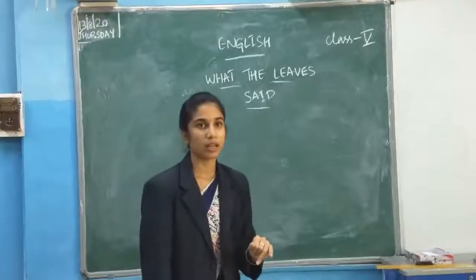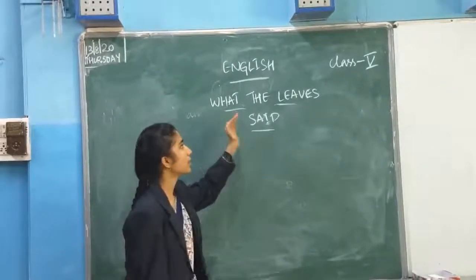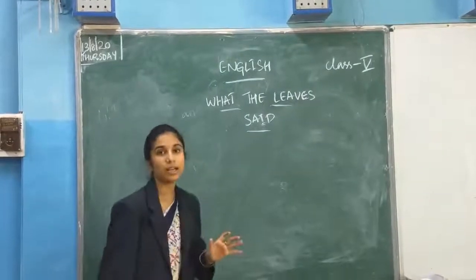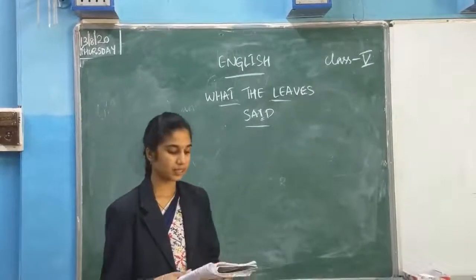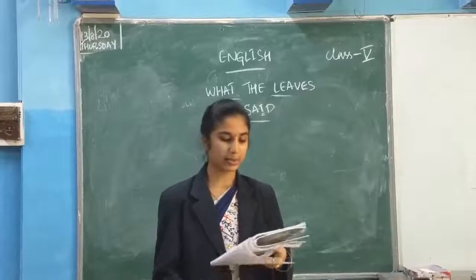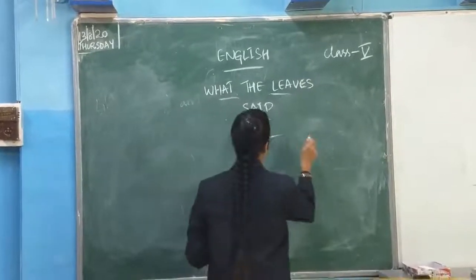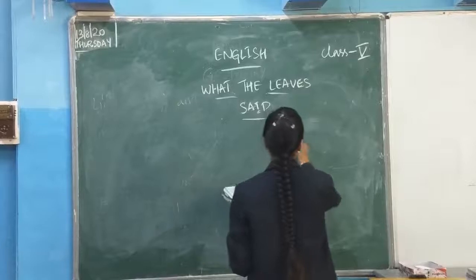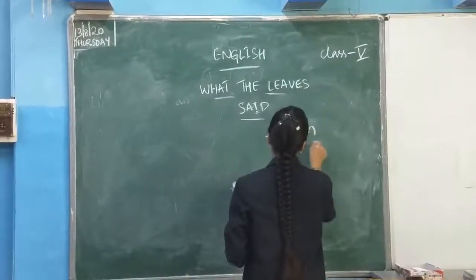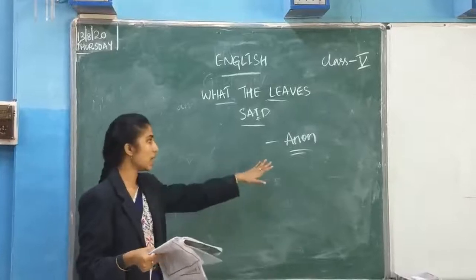We have completed one lesson and now this is the poem 'What the Leaves Said.' We will start the poem, children, and before starting we will see who is the writer of this poem. The writer of this poem is Anand.